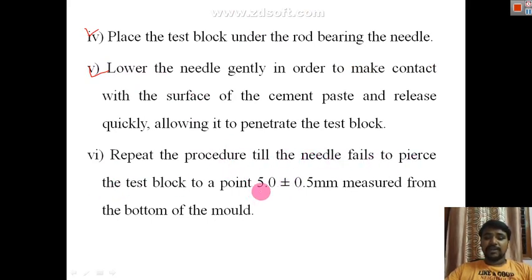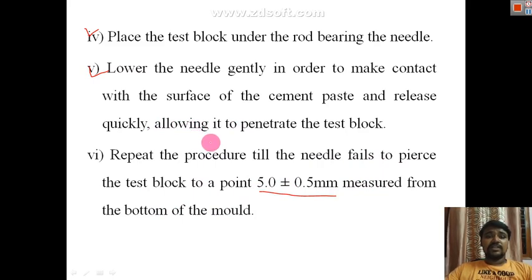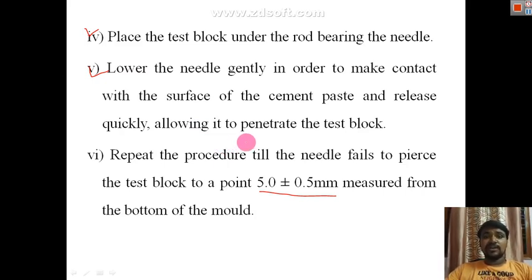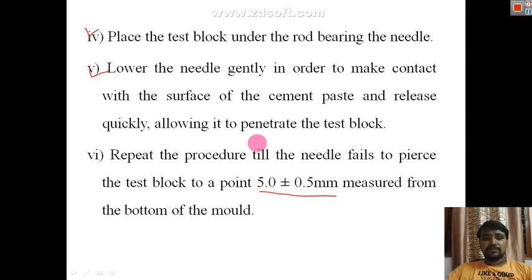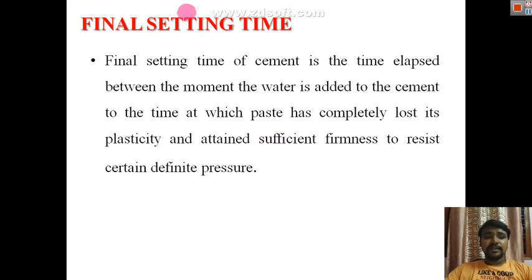Repeat the procedure until the needle fails to penetrate up to 0.5 mm from the bottom of the mold. The initial setting time is how long it takes for the needle to penetrate 5 to 7 mm. For ordinary Portland cement (OPC), the initial setting time is typically 30 minutes.